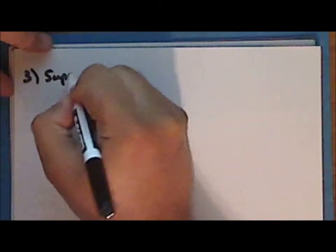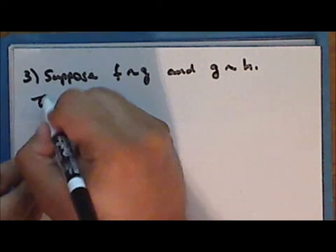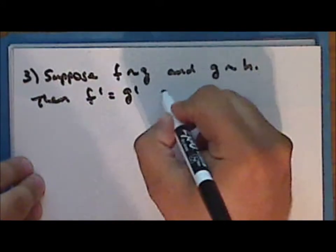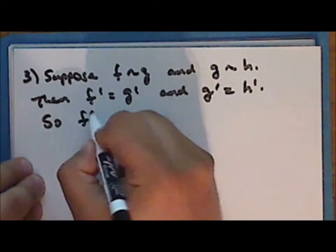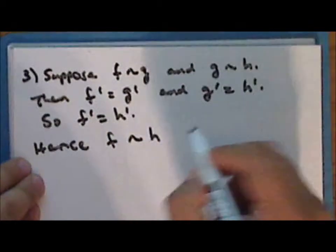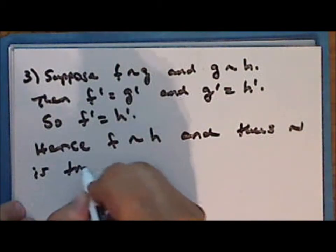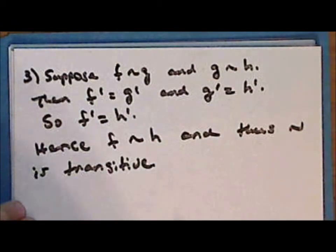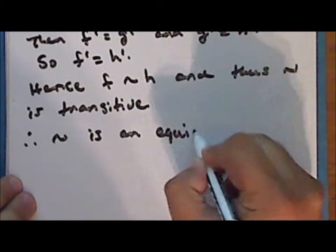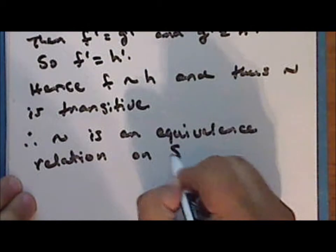Now suppose that F is related to G and G is related to H. Then F prime is equal to G prime and G prime is equal to H prime, and so F prime is equal to H prime, and hence F is related to H, and thus the relation is transitive. Therefore the relation is an equivalence relation on the set S.